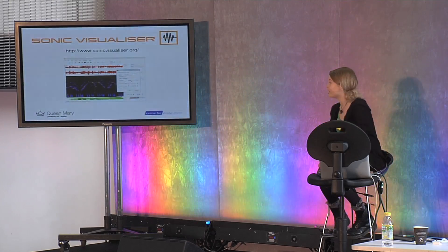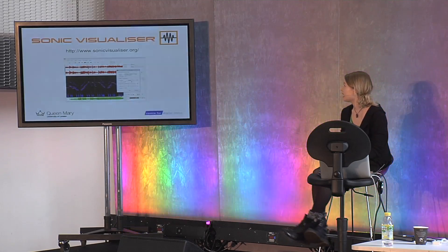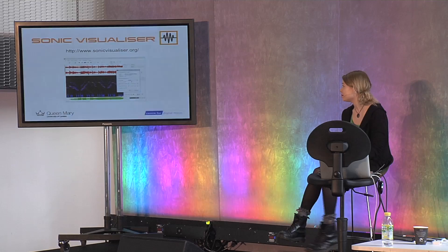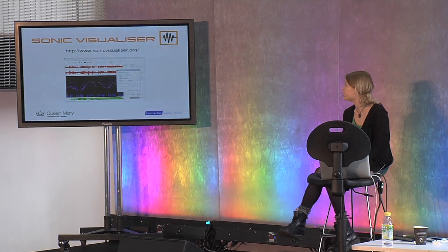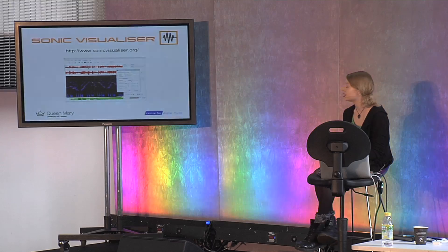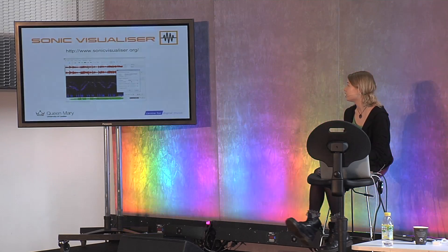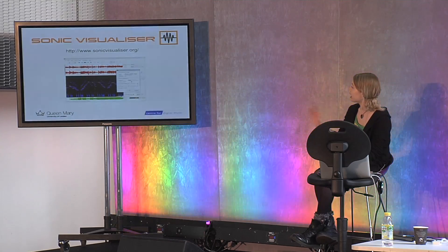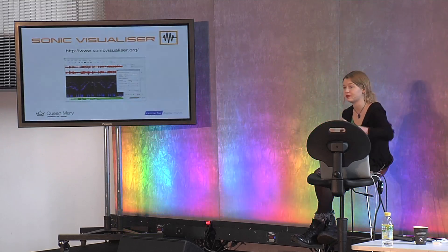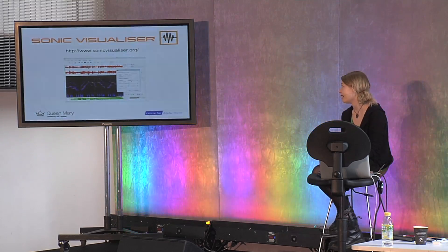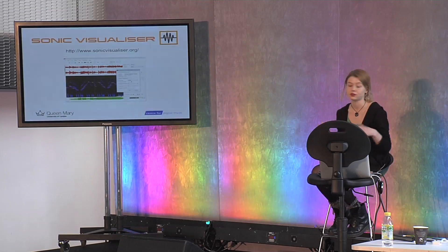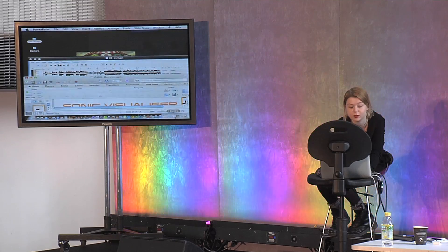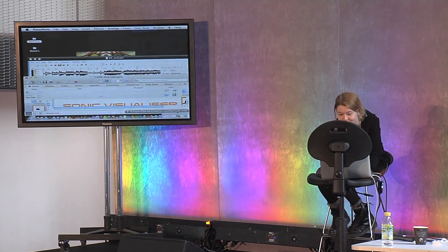The next thing I want to show you is Sonic Visualiser, which I mentioned earlier — a software application that allows you to view and analyse audio files. In this demonstration you'll hear a song play and view the waveform and then the spectrograph. There will be some feature extraction showing the tempo and beat location, then segmentation with different sections in different colours along the waveform, and finally the playback speed will be altered, which is useful for analysis purposes. This is available online if you want to play around with it.